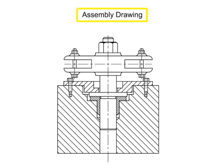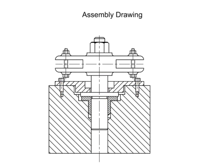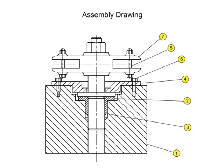Assembly drawings use section views to show interior subcomponents that may not be otherwise seen from conventional views. Balloon numbers are used to help identify each component for the parts list. To avoid confusion, fasteners and shafts are typically left out of assembly section views, even if the cutting plane would normally reveal them.